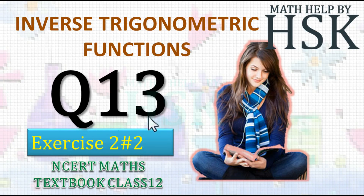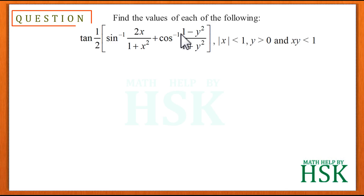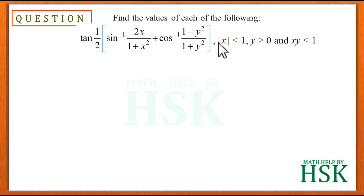We are taking question number 13 of Exercise 2.2 on inverse trigonometric functions. We have been given to find the value of the expression: tan of 1/2 times [sin⁻¹(2x/(1+x²)) + cos⁻¹((1-y²)/(1+y²))], along with the additional condition given so that this expression holds.